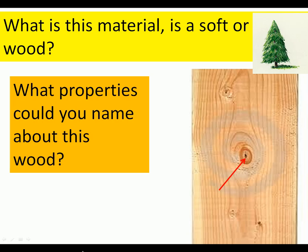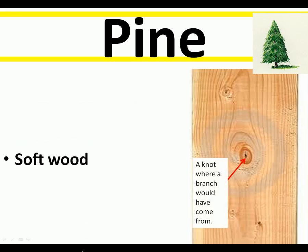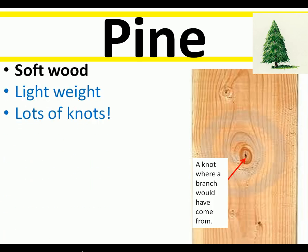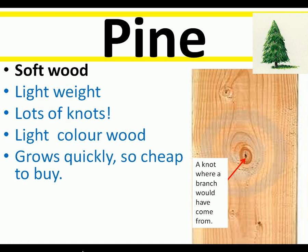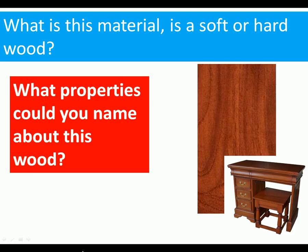Now we'll look at specific types of wood starting with pine. Pine is a softwood — it's lightweight and generally has knots because it's fast growing. It's a light-coloured wood that's easy to work and cheap to buy, so most cheap furniture is made from pine. It is prone to warping, and if used outside it generally needs some kind of treatment, otherwise it doesn't last long in the weather.